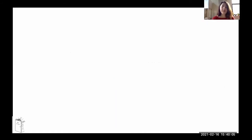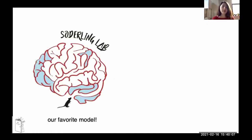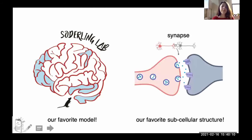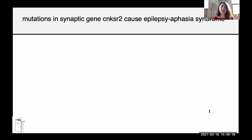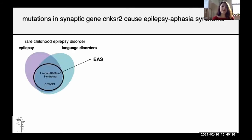To bridge this gap, we really have to be able to do functional studies, and for this we need good in vivo models that have construct-based and predictive validity. In Sutherland Lab, we use a mouse model system and are specifically interested in synaptic genes that are important for neural function and implicated in neurodevelopmental disorders. When I first started my PhD, I got interested in a synaptic gene called CNK-SR2, which had essentially unknown function, but in the past seven to eight years many clinical studies have shown that loss-of-function mutations in CNK-SR2 cause a syndrome called epilepsy aphasia.